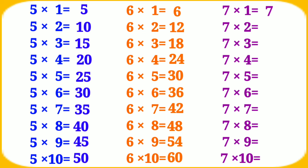7 twos are 14, 7 threes are 21, 7 fours are 28, 7 fives are 35.